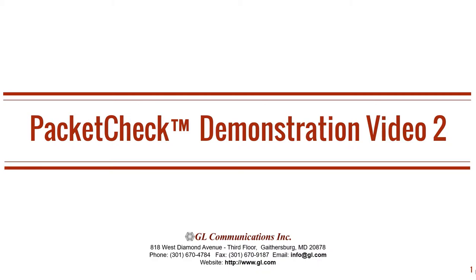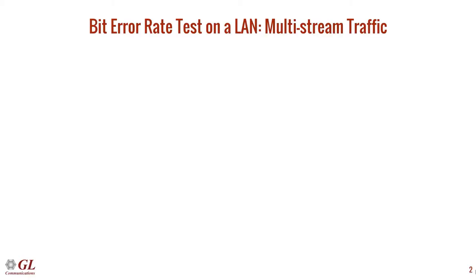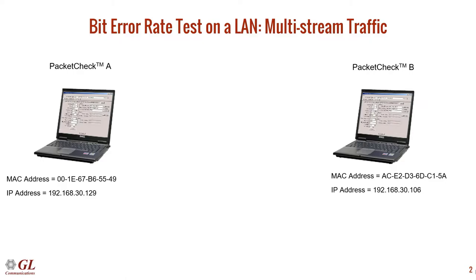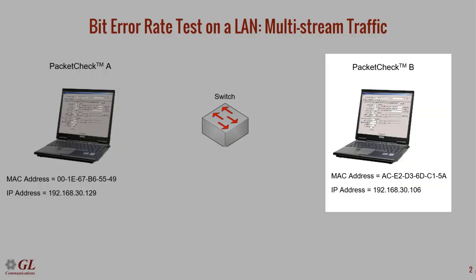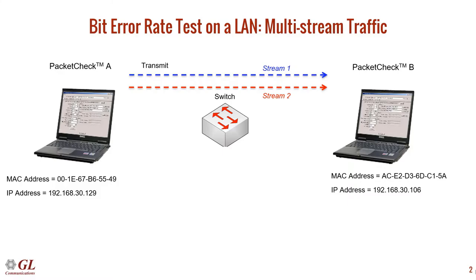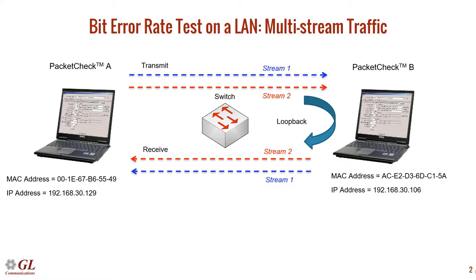This video is a continuation of our PacketCheck series. PacketCheck is our easy-to-use software program for Ethernet and IP testing. We will now demonstrate multi-stream traffic generation. We will demonstrate a bit error rate test using PacketCheck, which is installed on two computers. Both computers are located on a local area network and connected to an Ethernet switch. Let's call these PacketCheckA and PacketCheckB. PacketCheckA will transmit to PacketCheckB, and PacketCheckB will loop back traffic to PacketCheckA.